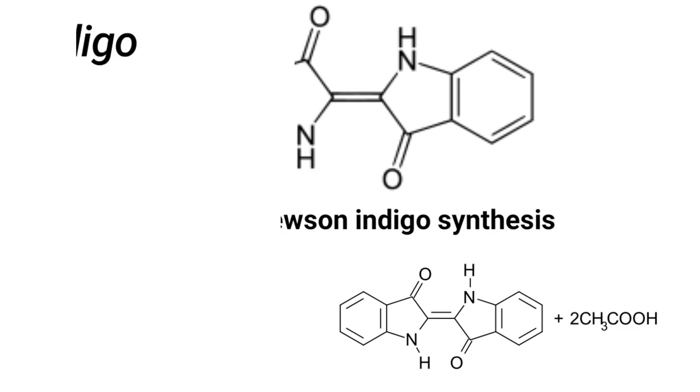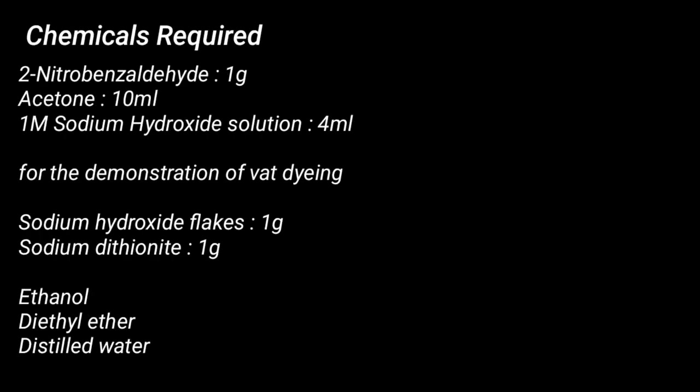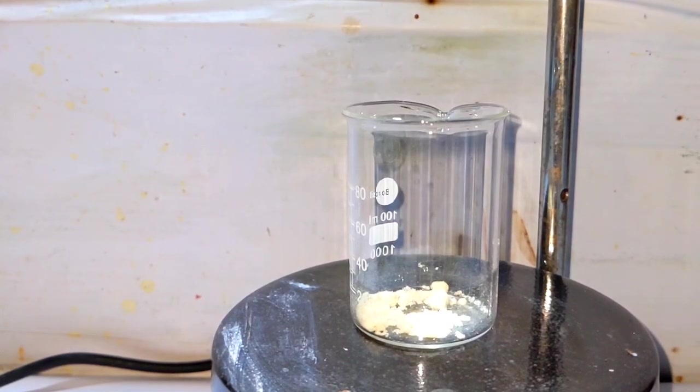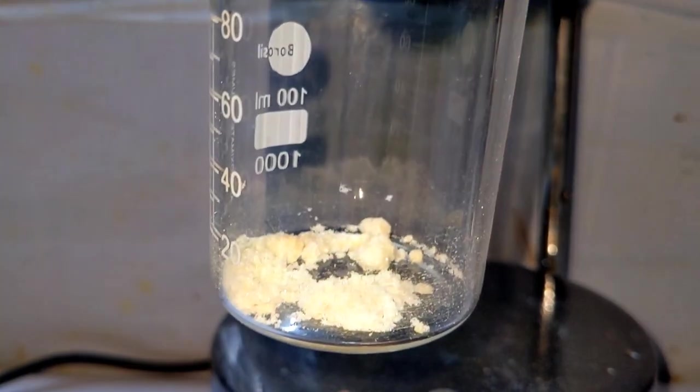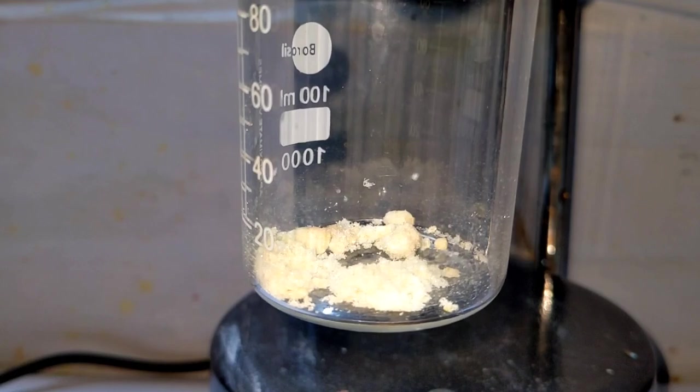The chemicals you need for this preparation are 1 gram of 2-nitrobenzaldehyde, 10 milliliters of acetone, and 4 milliliters of 1 molar sodium hydroxide solution. For the demonstration of vat dyeing you will also need 1 gram of sodium hydroxide flakes and 1 gram of sodium dithionite, as well as organic solvents like ethanol and diethyl ether.